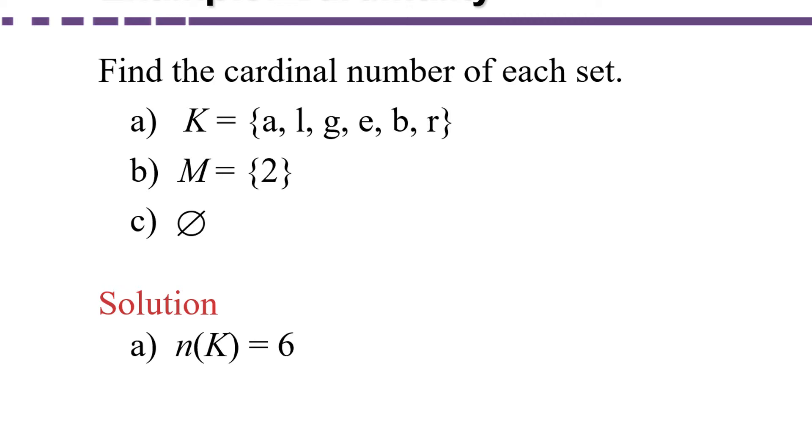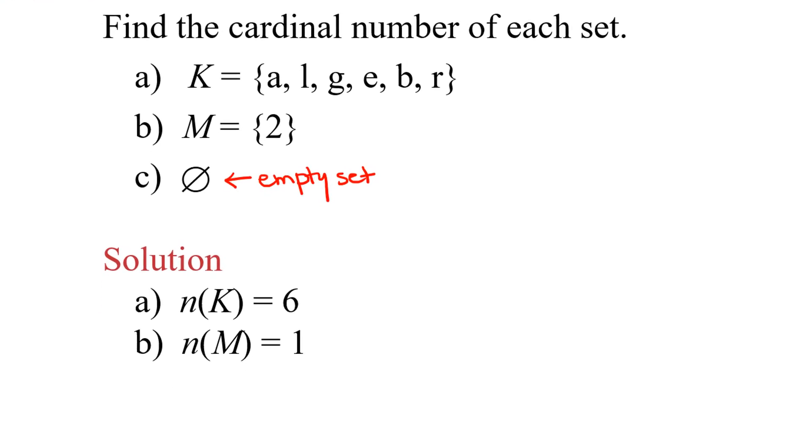Now let's look at the set M in part B. M is the set that just contains the number two. Now don't get in a hurry when you're doing your homework and accidentally put n of M equals two, because there's only one element in this set. The number of elements in M is one, so the cardinality is one. Now if you recall from our previous discussion, this symbol means the empty set. It's a circle with a line through it indicating there's nothing in that set. So that means the number of elements is zero. The number of elements in the empty set is zero.